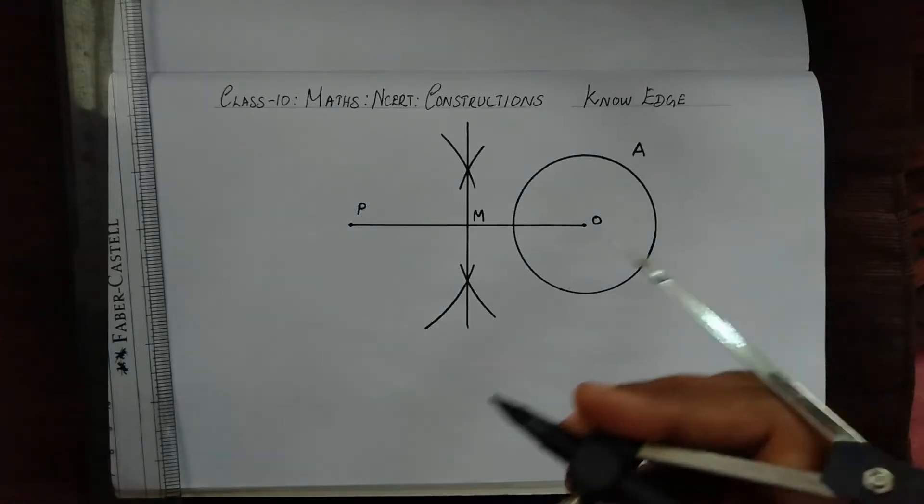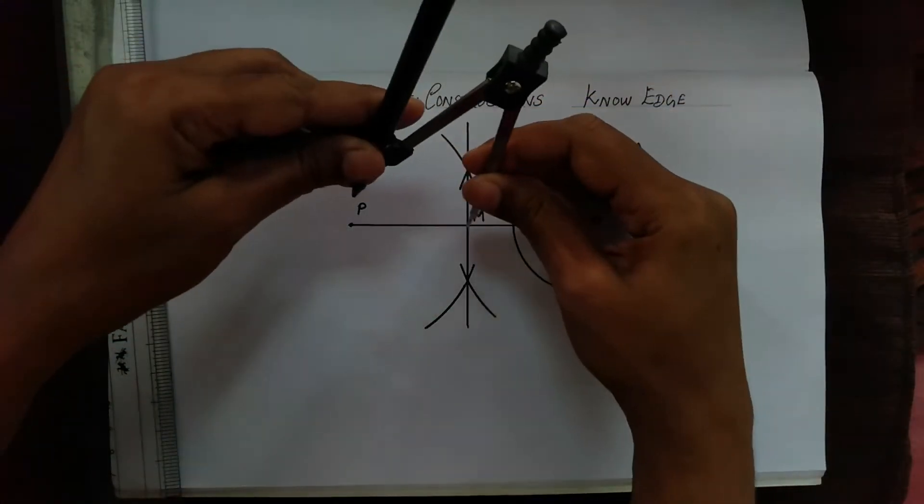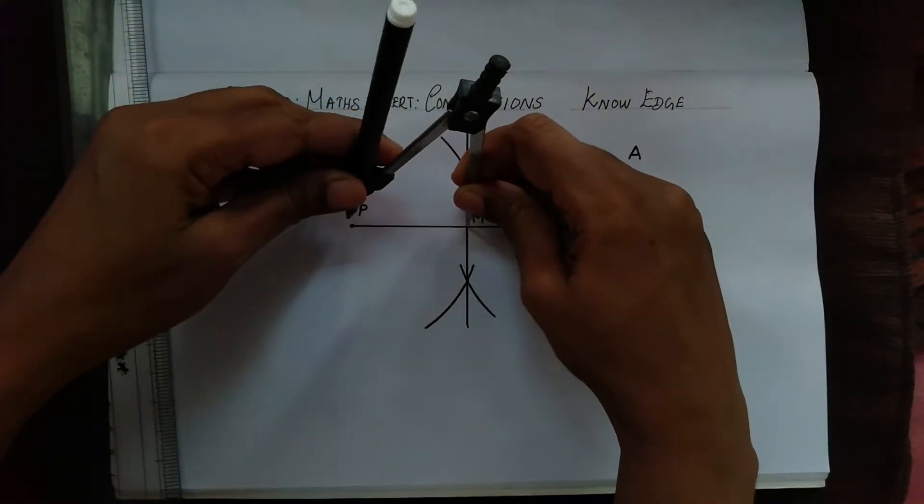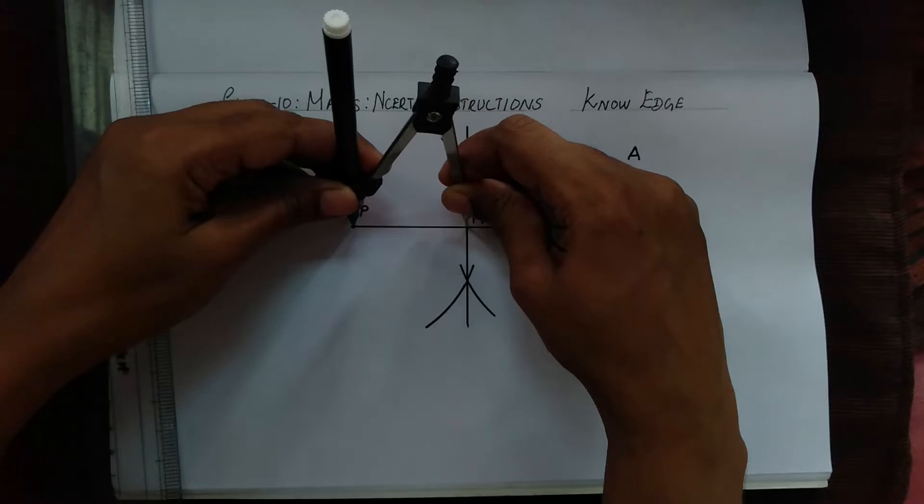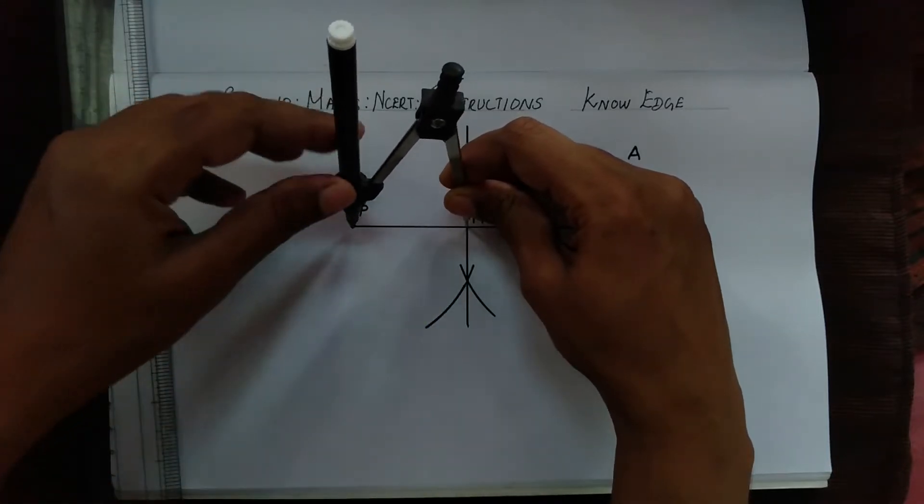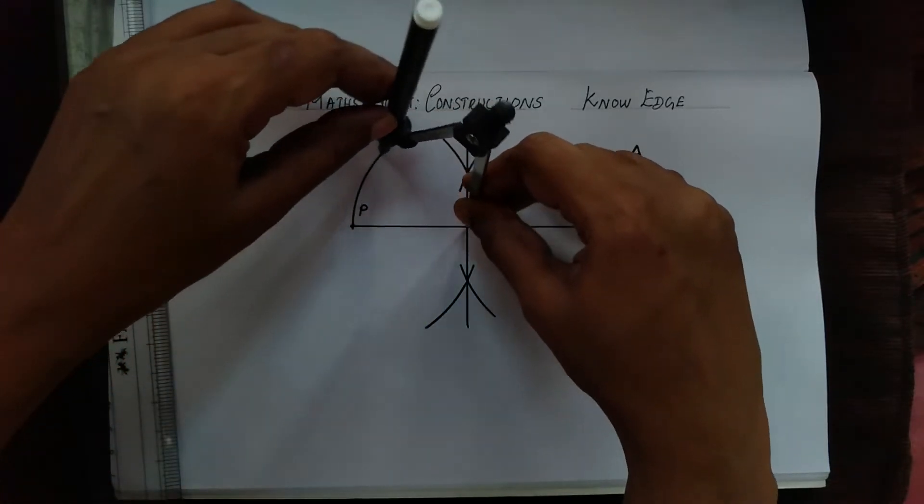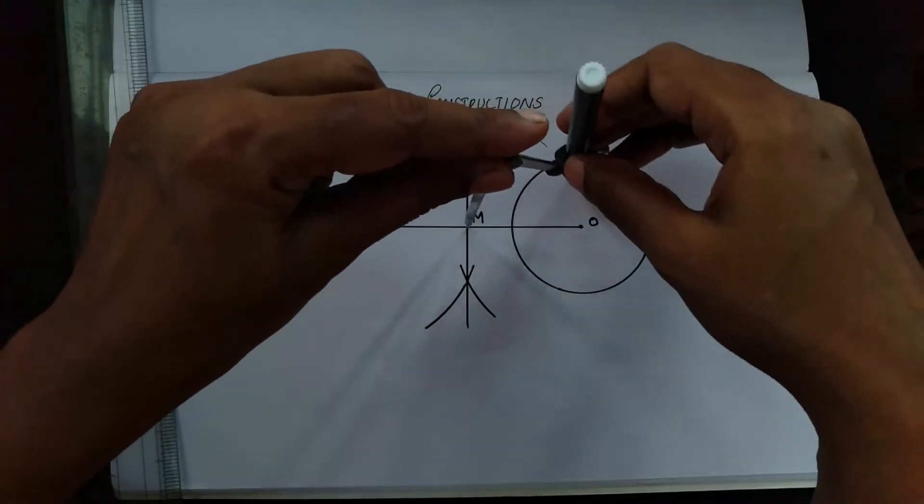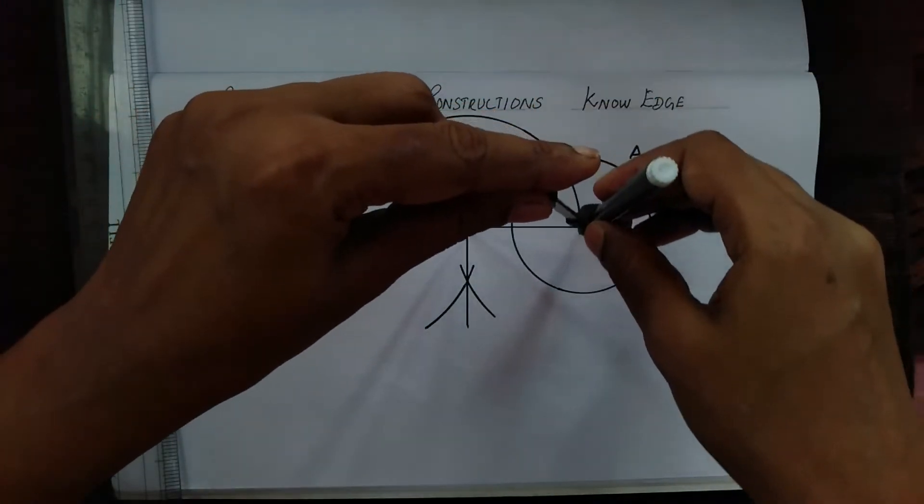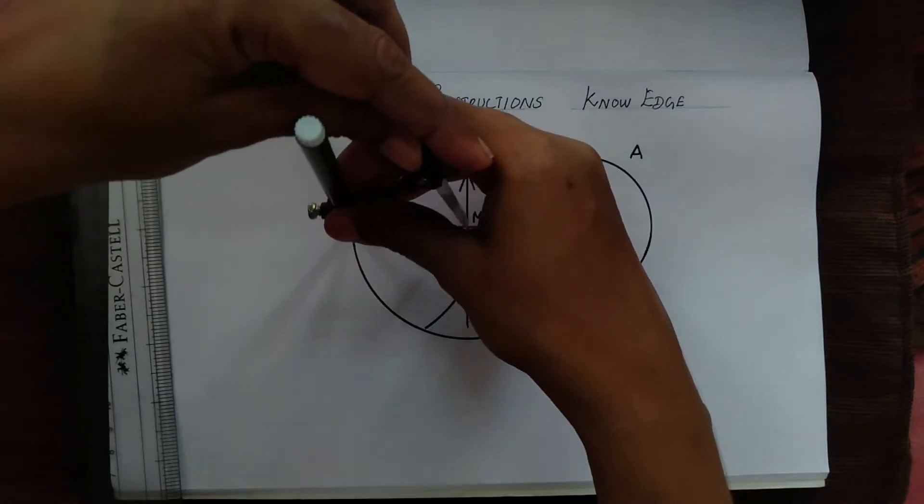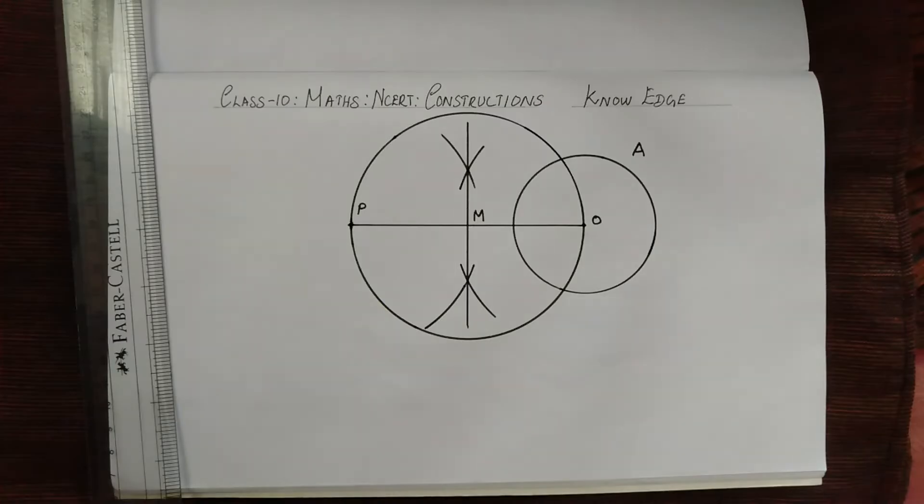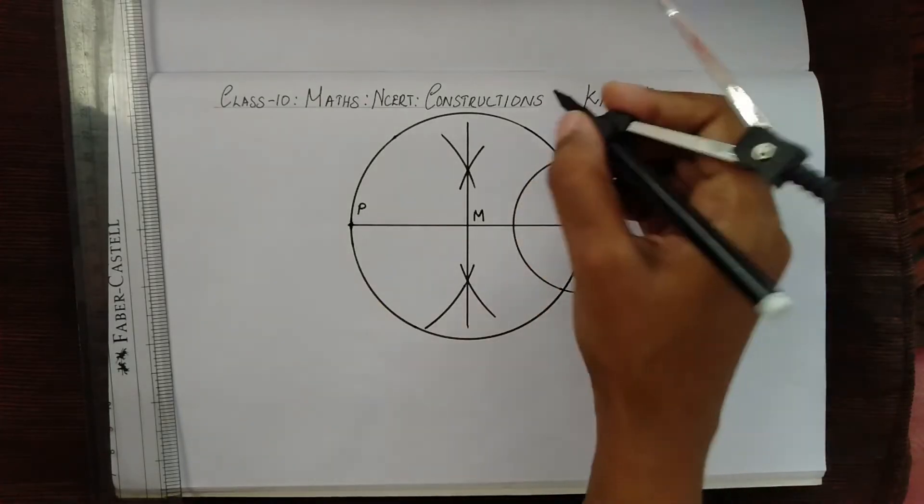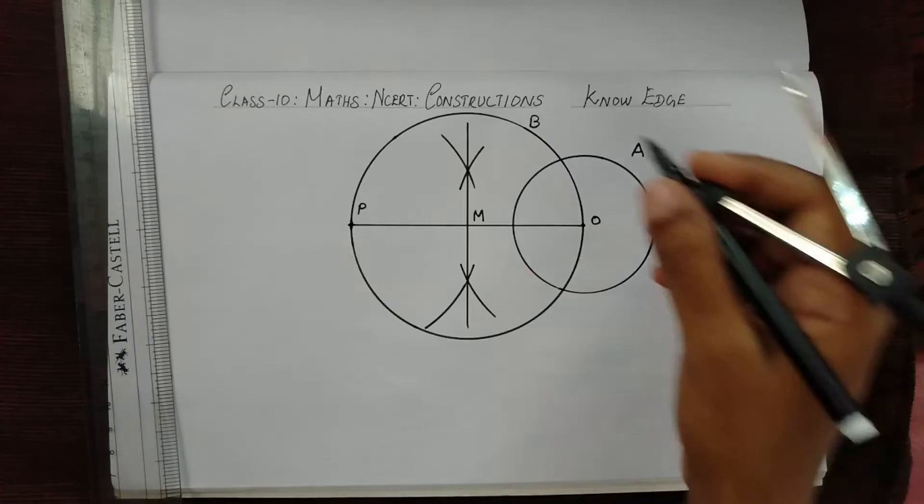Now we have to keep the compass here at M and measure MP and draw another circle from here. You can see that this circle, let's name it as B, this circle intersects circle A at this point.